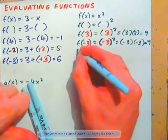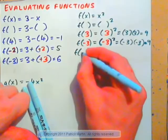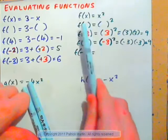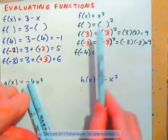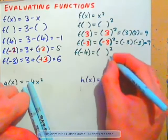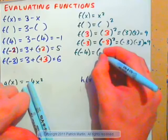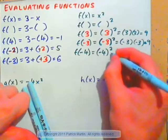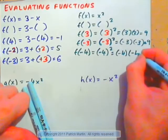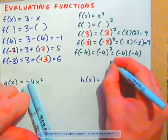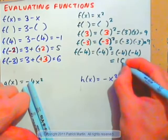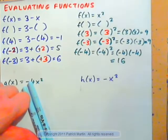Go ahead and get f of negative 4. f of x is x squared, so f of negative 4 is parentheses squared. In the parentheses, we put negative 4. So, that makes negative 4 times negative 4. Negative times negative is positive: 16.